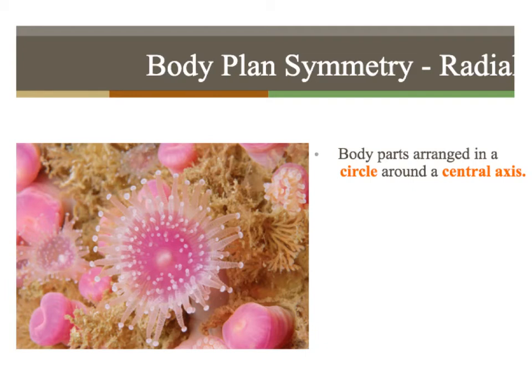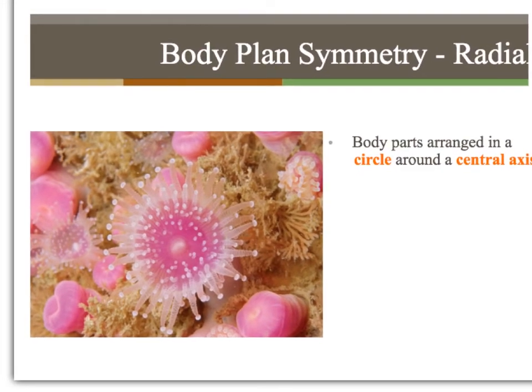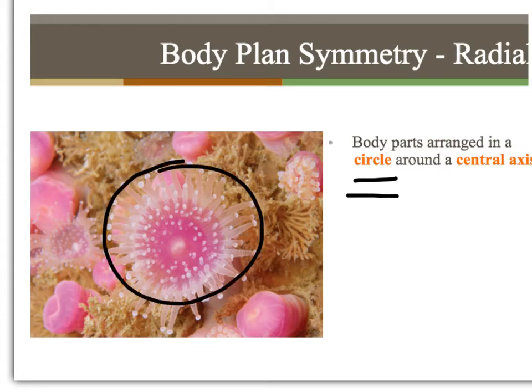This is my first ever screencast, so there are going to be a few mistakes. Let's get back to this. There are two basic body plans: radial and bilateral. Radial is body parts arranged around a central axis, so it kind of looks like a circle — that is radial symmetry.